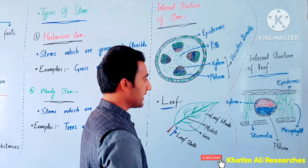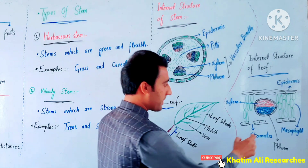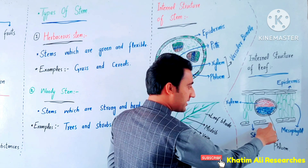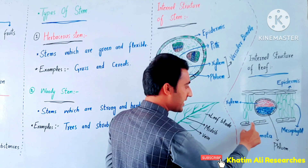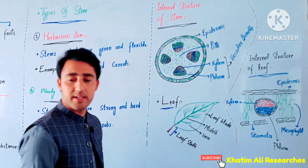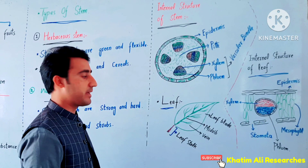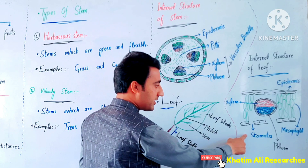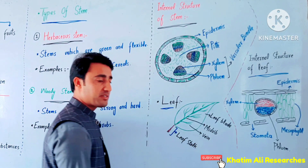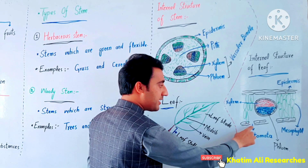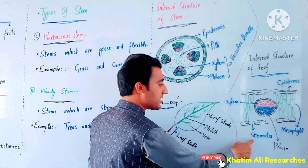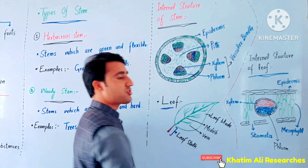The internal structure also includes pores called stomata. Stomata are used to exchange gases in the plant. Carbon dioxide enters through the stomata and is used by the plant.